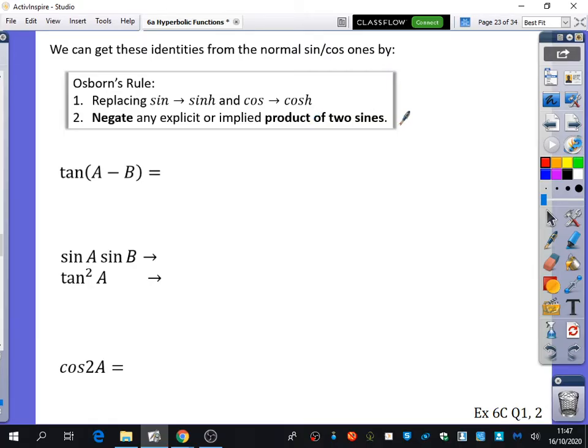but you negate any explicit or implied product of two sines. So let's just break down what this is actually saying here. A product of two sines means that we've got two sines that have been multiplied together. And it can either be explicit. For example, if your formula contains something like sine squared x, that is explicitly a product of two sines.